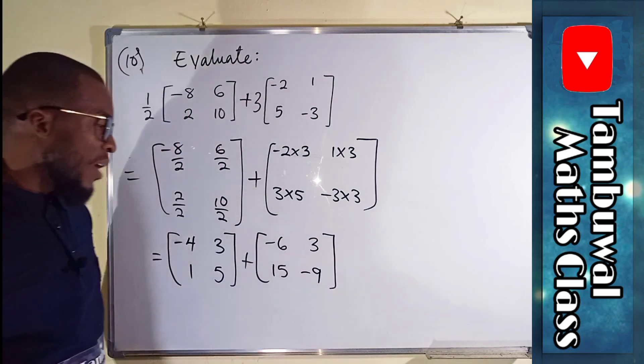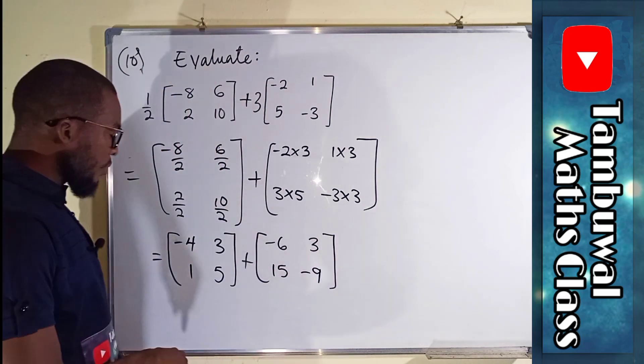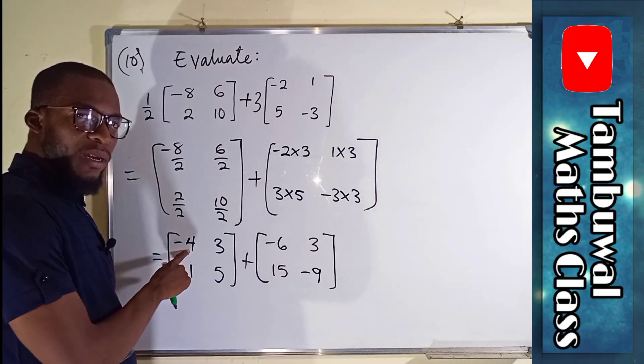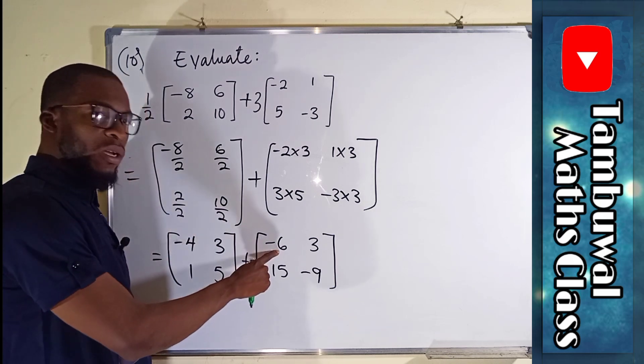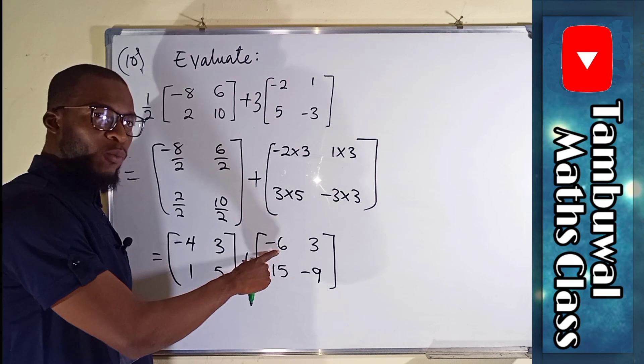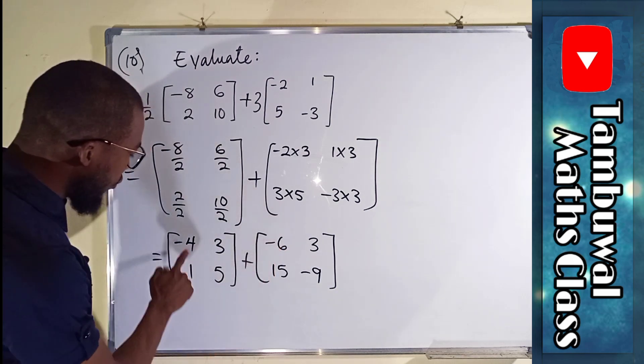So we are now free to add the matrix together. This element is in row 1 column 1 and we have to add it with the element in row 1 column 1 in the next matrix. So we have